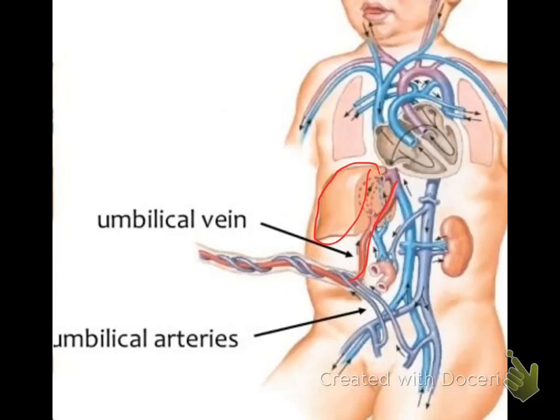Within weeks of fetal development, the umbilical vein becomes completely obliterated, converting into a major ligament of the liver — the falciform ligament. So in fetal life it is the umbilical vein, and within a few weeks of the birth of the baby it becomes the falciform ligament, which is the obliterated form of the umbilical vein.